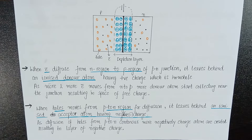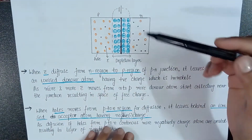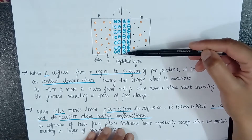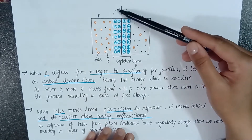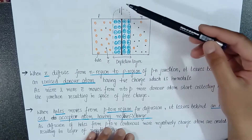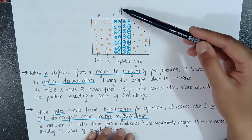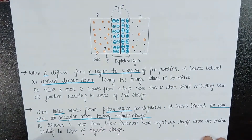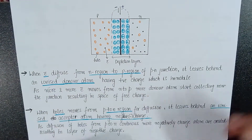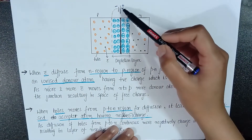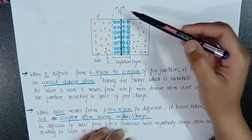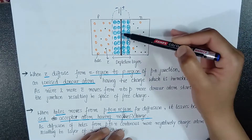The depletion layer set up on either side of the junction acts like a fictitious battery. On the P side, negative acceptor-type ionized atoms are collected, and on the N side, positive donor-type ionized atoms are collected due to the diffusion of holes and electrons. This makes the P side behave like the negative terminal of a battery and the N side like the positive terminal. This fictitious battery generates an electric field that opposes further diffusion — electrons experience repulsion from the negative side, and holes are repelled by the positive side.